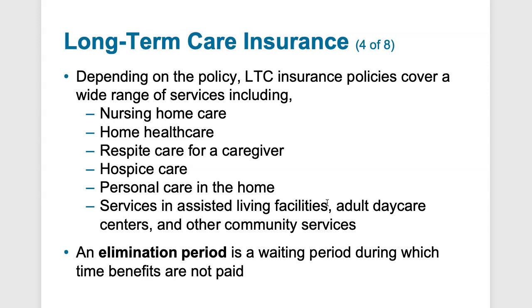Benefit triggers determine if someone qualifies for long-term care benefits. The insured must meet one of these triggers to receive benefits. The common trigger is inability to perform a certain number of Activities of Daily Living (ADLs) listed in the policy — such as dressing, bathing, cooking, moving from a chair to a bed, or using the toilet. Another trigger is the need for supervision due to cognitive impairment — for example, short or long-term memory impairment from dementia or Alzheimer's disease.